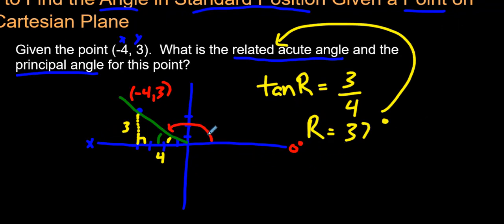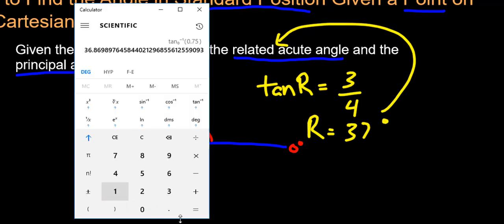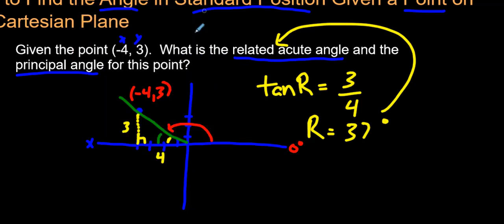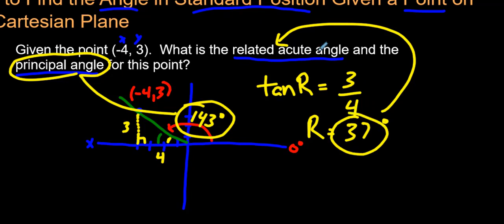So how do we figure out what this principal angle is? Well, remember, 0 degrees, 90 degrees, 180 degrees, where I'm pointing. 180 minus 37, and if you want to do it on your calculator you can, 180 minus 37 should give us what the principal angle is, 143 degrees. So 143 degrees is our principal angle, and 37 degrees is our related acute angle.